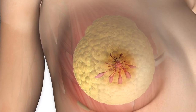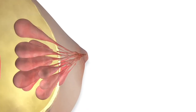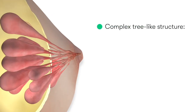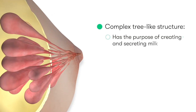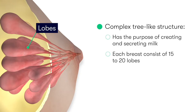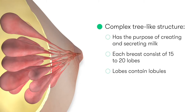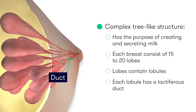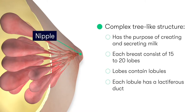As we can see, posterior to the nipple and the areola, the breast is composed of a complex tree-like structure, and this has the purpose of creating and secreting milk during lactation. The leaves of this tree-like structure are called lobes, and there are about 15 to 20 within each breast. Each lobe contains lobules, which are made up of collections of milk-producing alveoli. Each lobule has its own lactiferous duct, which is responsible for carrying the milk from the lobule to the nipple from where it can be released.